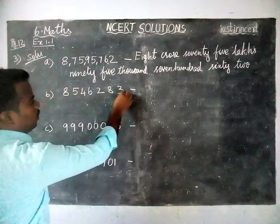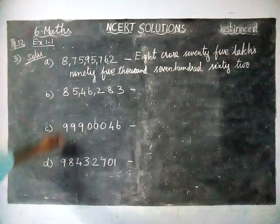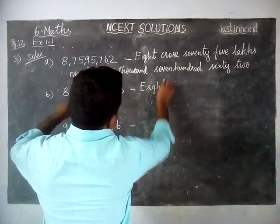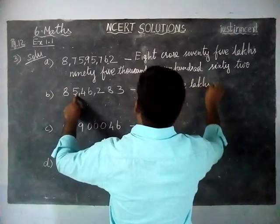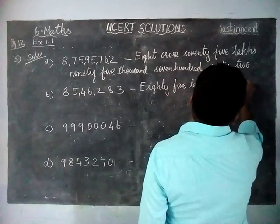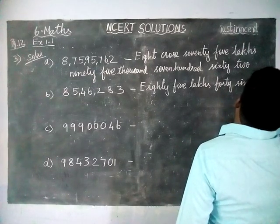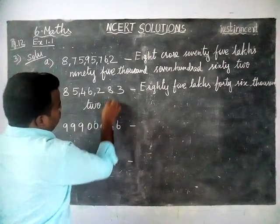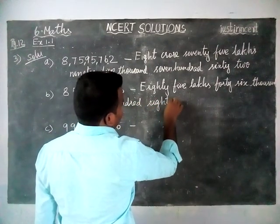Next number: ones, tens, hundreds, thousands, ten thousands, lakhs, ten lakhs. This number is eighty-five lakhs, forty-six thousand, two hundred eighty-three.